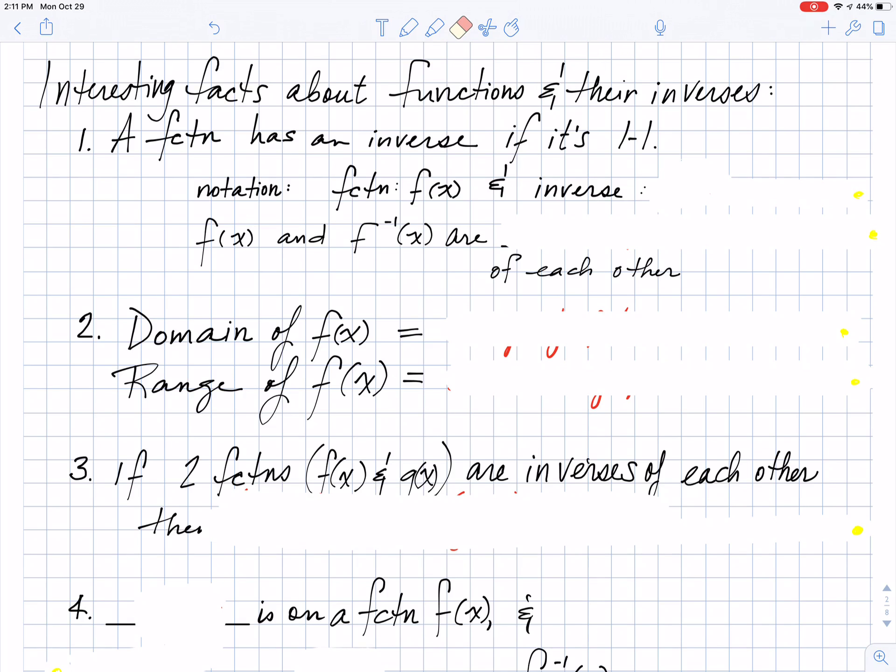So the first fact is that a function is going to have an inverse if it is one-to-one. And my notation for that, so let's learn how to notate it. You already know that a function, we typically call it f of x, but an inverse, we write it differently. It is f, it has a little negative one that looks like a power, but it is not a power.